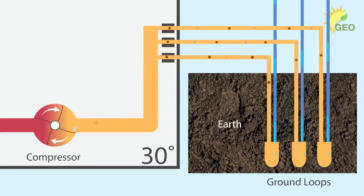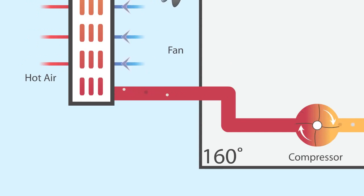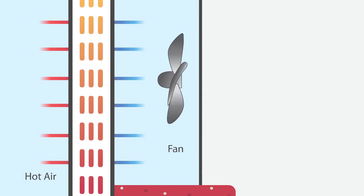Let's say the refrigerant starts its journey in its gaseous state and enters the compressor at 30 degrees. The compressor compresses the gas, which increases the pressure and raises the temperature to 160 degrees. The refrigerant travels to a coil where a fan blows across it. The air blowing across this coil absorbs the heat energy and distributes it throughout the home.